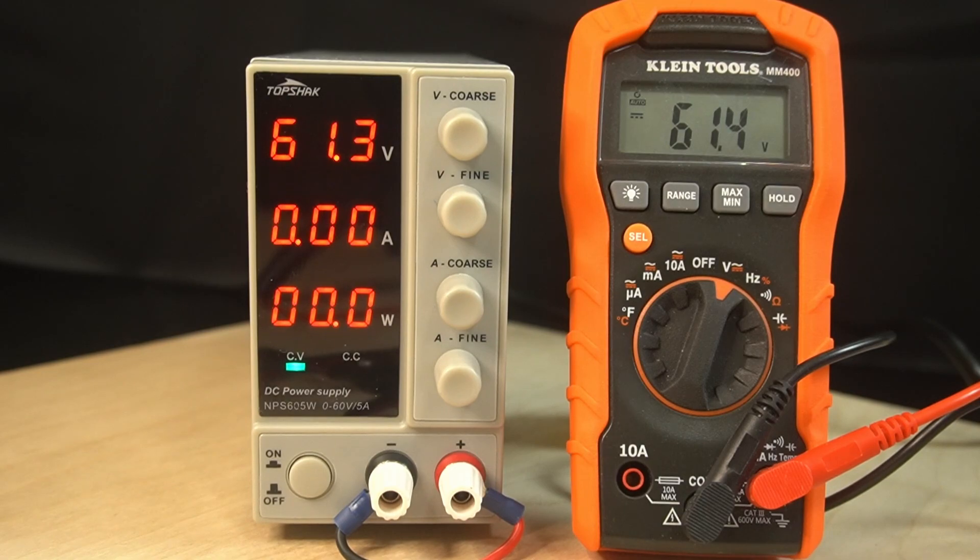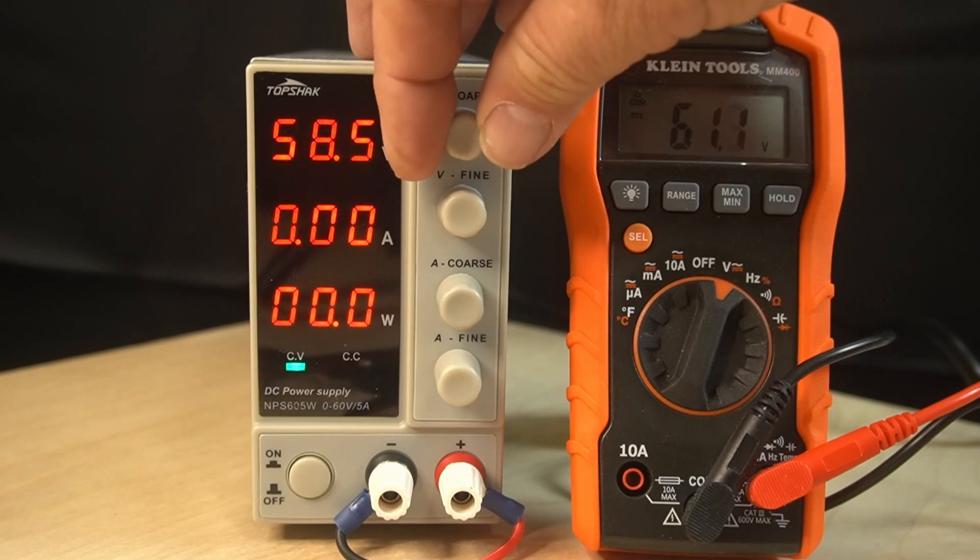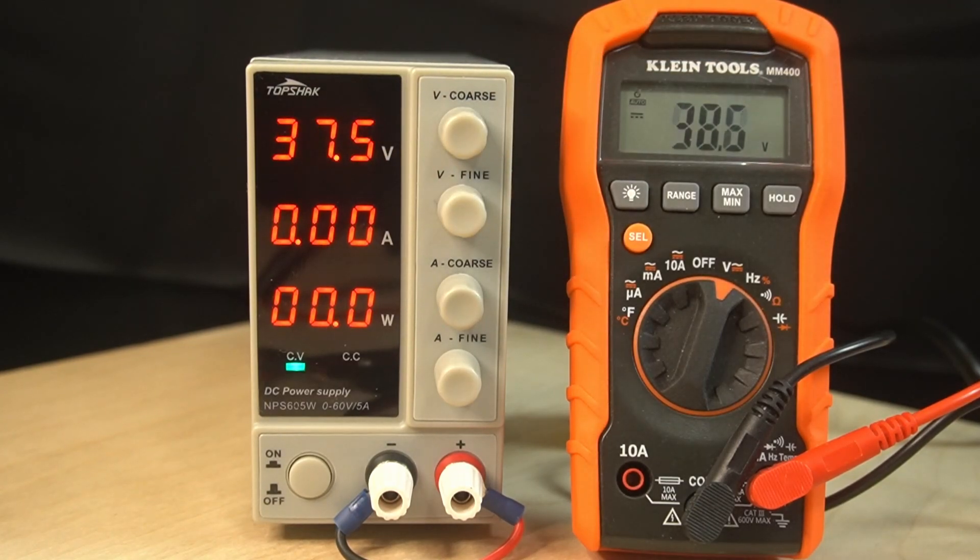All right. So this is a Klein MM400. It's probably the best multimeter I own. So it shows 61.3 and we're 61.4. So let's just bring it down. I'll just let it go. We're 18.4 and it says 18.54. So pretty close. I think that's close enough.